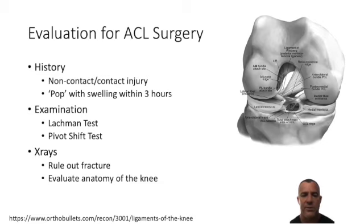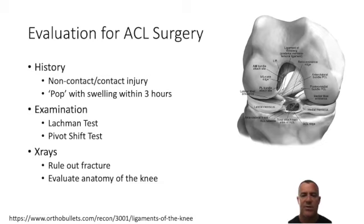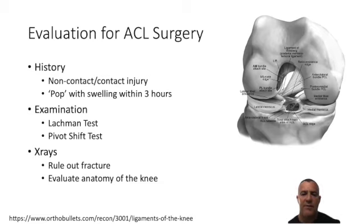Almost always we obtain x-rays both to rule out fractures and to look at the anatomy of the knee. More and more we understand there are specific anatomic factors visible on x-ray, such as your tibial slope, the width of your notch, and other factors, including looking for a fracture to make sure there isn't another injury we need to be looking out for.